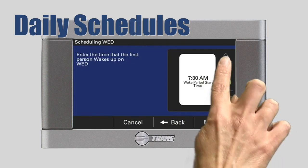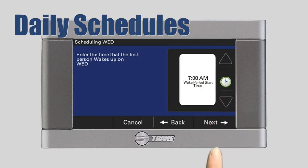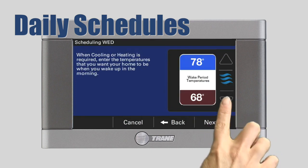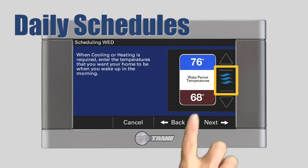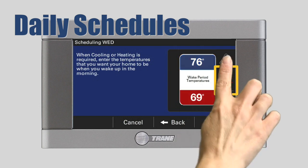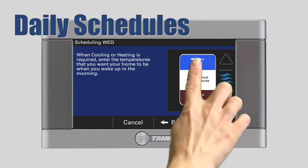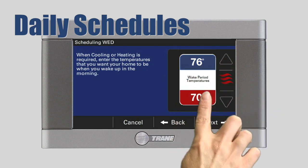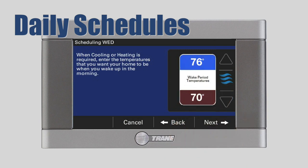Using the up and down arrows, set the time when the first person wakes up on this day and press Next. Now, set the desired temperature for both heating and cooling modes. When the wavy lines are blue, you are setting the cooling target temperature. When the wavy lines are red, you are setting the heating target temperature. Press the target temperature display to change from cooling to heating and set the desired target temperature. Then press Next.